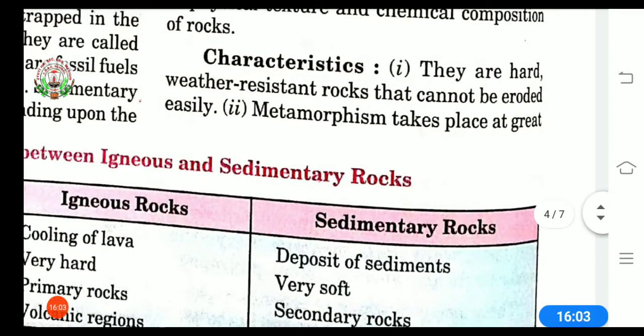Now we are having characteristics of metamorphic rock. First, they are hard weather resistant rocks that cannot be eroded easily. Resistance means ability not to be affected. So these metamorphic rocks are hard and they are not having any kind of effect of weather on these rocks and they are not easily eroded by water or air.